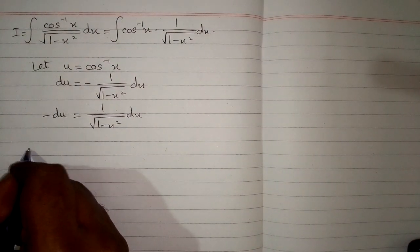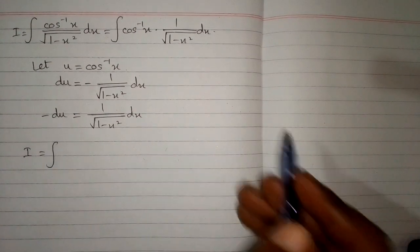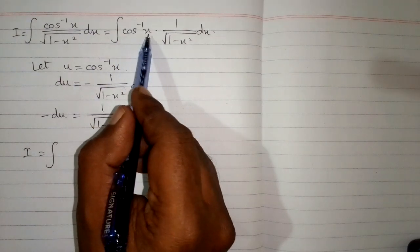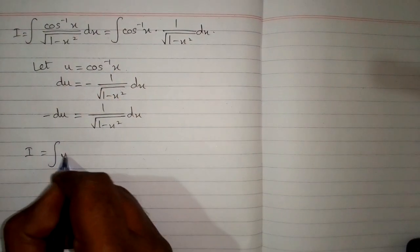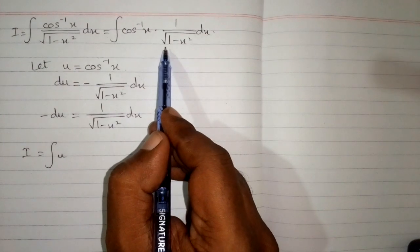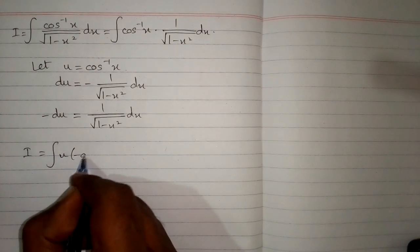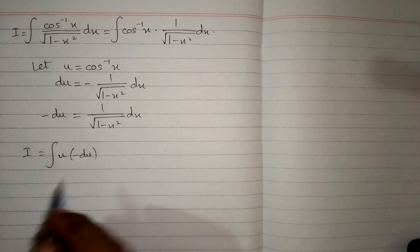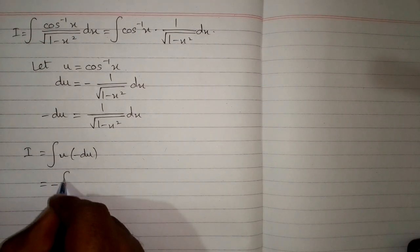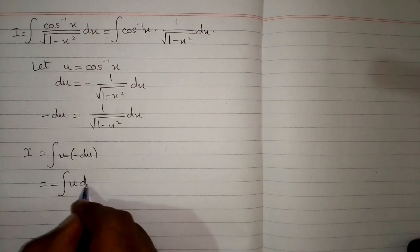Now the integral I can be written as the integral of: in place of inverse cosine x we write u, and in place of 1 upon square root of 1 minus x square dx we write minus du. So we have minus the integral of u du.